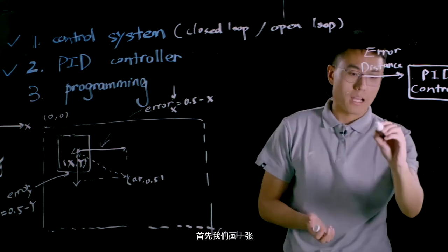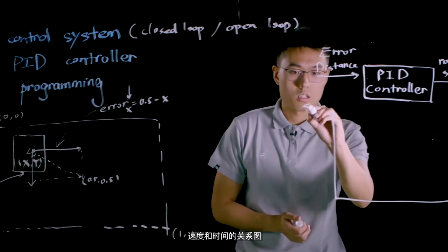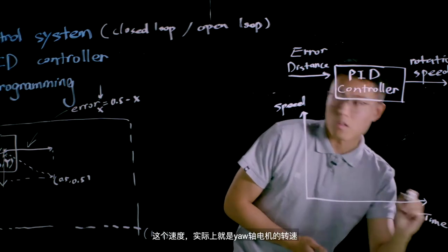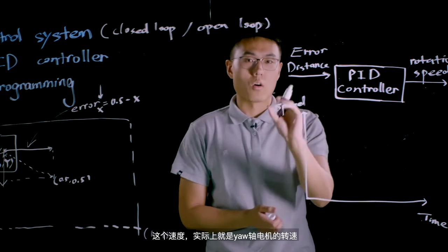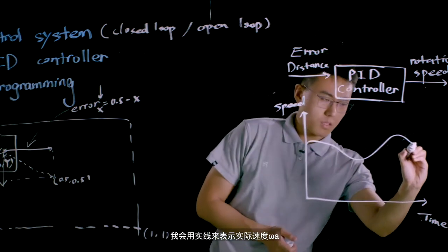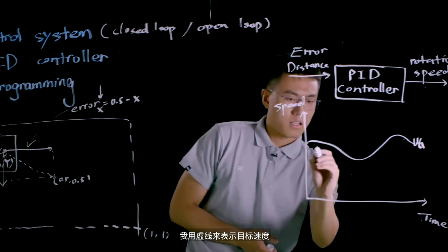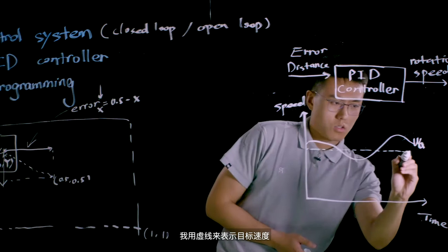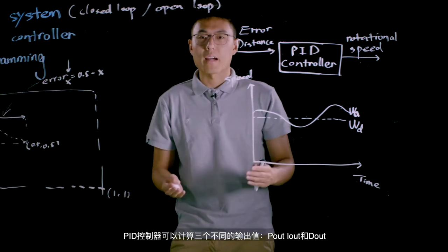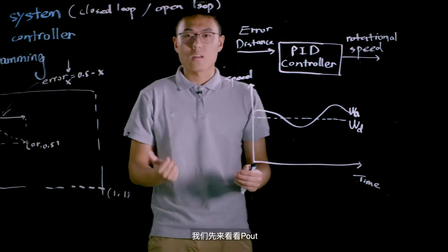So first of all, we need to draw a graph of speed versus time. So this speed is actually the rotational speed of the motor on yaw axis. I'll use a sorted line to represent the actual speed, omega a, and I'll use dash line to represent the target speed or desired speed, omega d. PID controller can calculate three different outputs, p out, i out, and d out. Let's take a look at the P out first.